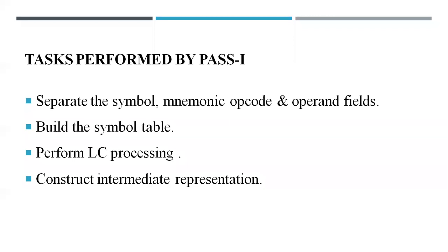Let us list out the tasks performed by Pass 1. The first task is to separate the symbol, mnemonic opcode, and operand fields of each and every instruction in the assembly language program. Once the separation is done for each instruction, the next step is to build the symbol table, which is continuously updated depending on the symbols encountered at different instructions.